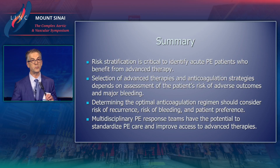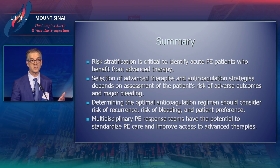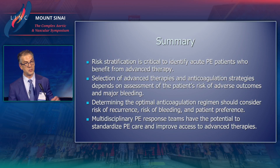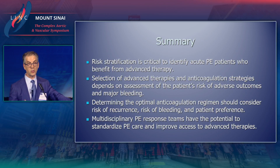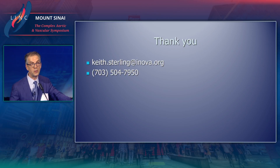In summary, risk stratification is critical to identify acute PE patients who would benefit from advanced therapy. Selection of advanced therapy and anticoagulation strategies depends on assessment of patients' risks of adverse outcomes and major bleeding. Determining the appropriate anticoagulation regimen should consider risk of recurrence, risk of bleeding, and patient preference. Multidisciplinary PE response teams have the potential to standardize therapy and improve access to advanced therapies.